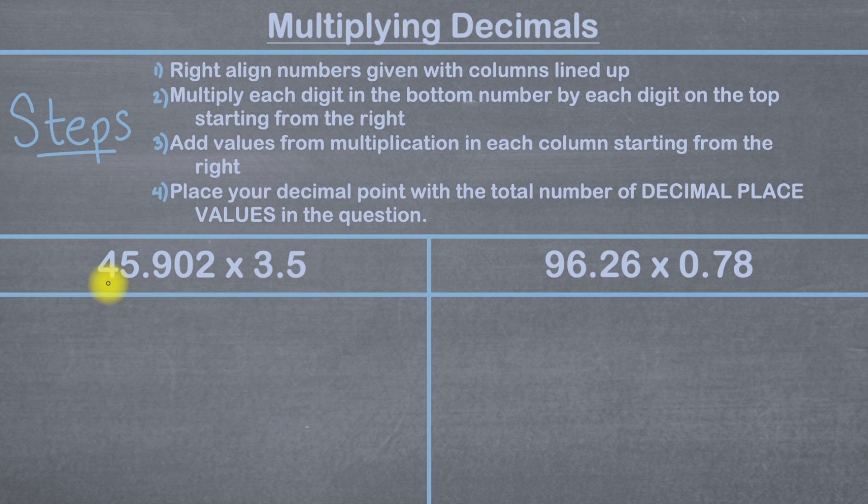So here this first number is 45.902. That has five digits in it: one, two, three, four, five. And this number here 3.5 has two digits in it: one, two.